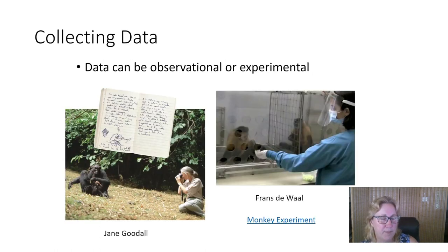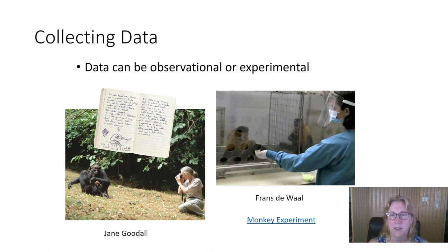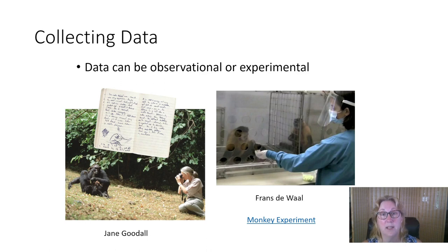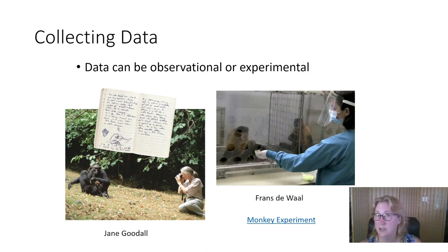There are two main categories of scientific data: observational and experimental. People outside of science often think only experimental data counts, and that if you can't do experiments on something, you can't study it scientifically — like saying we can't know anything about dinosaurs because you can't do experiments on them. That's not true. A lot of scientific data is observational. Somebody studying the sun can't do any experiments with it, but can still collect data in a scientific way.